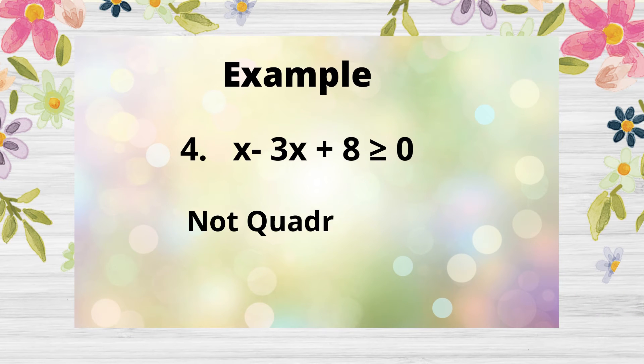For number 4 given, x - 3x + 8 ≥ 0. Since the degree of 2 is not visible means it is not quadratic inequality.